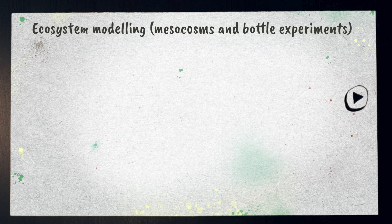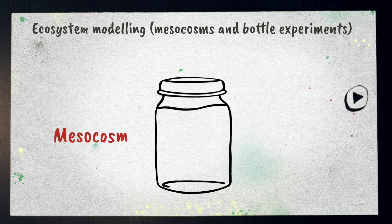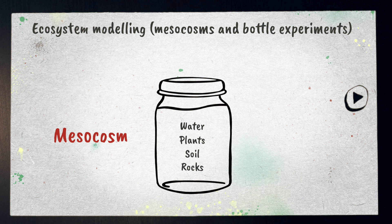Ecosystem modelling involves creating a representation of a real ecosystem or part of it. You may have made a mesocosm in class. It involves putting rocks, soil, water, plants, and other living things in a sealed glass jar with the intention that it can live indefinitely because of interactions within the system.